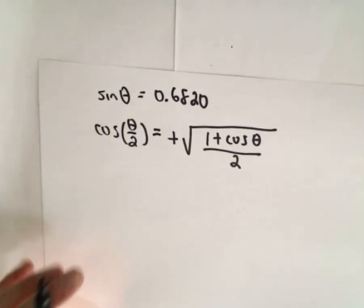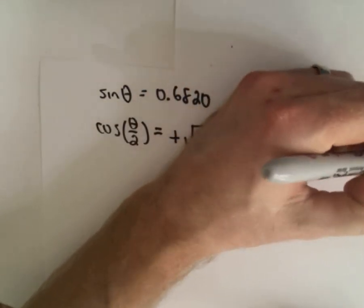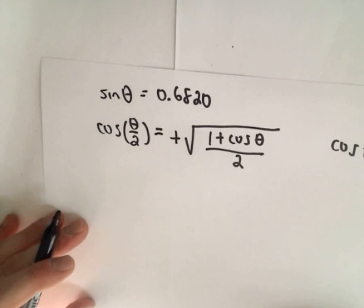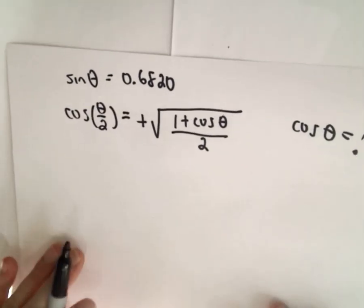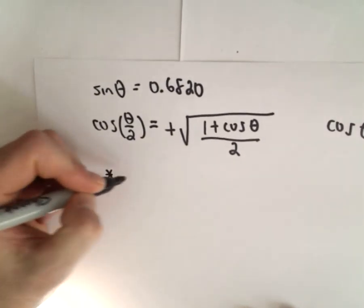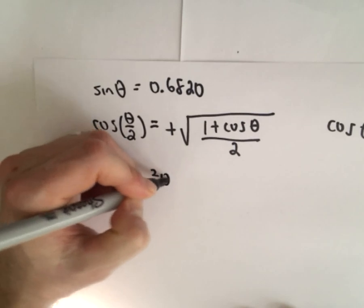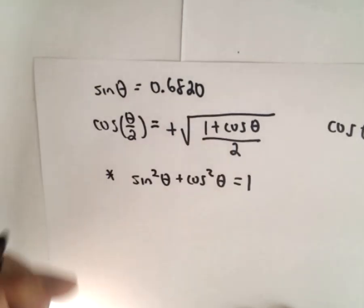Now the problem is I just need to figure out a value for cosine theta. I think, what on earth is cosine theta? I don't have a value for that. I have a value of sine theta. Well, we've got an identity that relates sine and cosine. Namely, we know that sine squared theta plus cosine squared theta equals one.